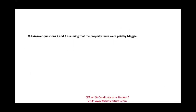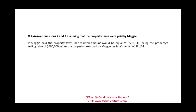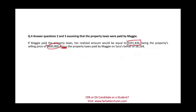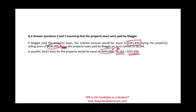Now assume that the property taxes were paid by Maggie instead. If Maggie paid the property taxes, her amount realized will equal $600,000 minus the property taxes she paid on behalf of Sarah, which we computed as $8,164, giving Maggie a realized amount of $591,836. In parallel, Sarah's basis will be $600,000 minus what Maggie paid on her behalf, resulting in $591,836 as well.